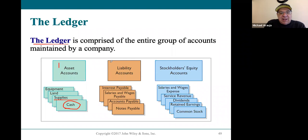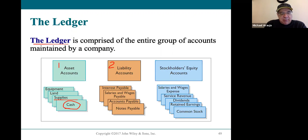After all the asset accounts are listed in the ledger, the second group of accounts listed are the liability accounts, again in the way you would see them on a classified balance sheet. So your current liability accounts would be listed first. Each of these accounts would have its own little section in the ledger, and it would show you all the activity in that account.